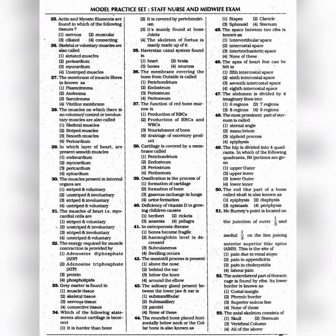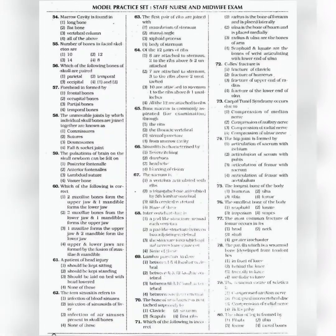Question 52: The anterior lateral part of the thoracic cage is formed by ribs; its lower border is known as — the answer is option 1: Costal margin. Question 53: The axial skeleton consists of — the answer is option 4: All of the above, that is skull, sternum, and vertebral column. Question 54: Marrow cavity is found in — the answer is option 1: Long bone.